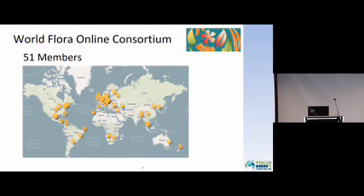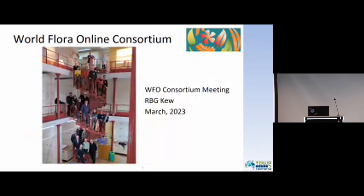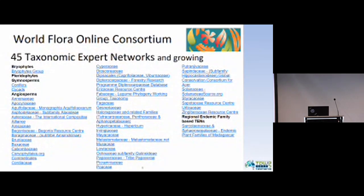We've formed a consortium for the World Flora Online project. It includes 51 members now, worldwide. Here is a picture of our most recent meeting of the World Flora Online Consortium at Kew Gardens in London in March this year. We also have 45 taxonomic expert networks and growing, covering these plant groups and working on improving the classification for all of these groups.